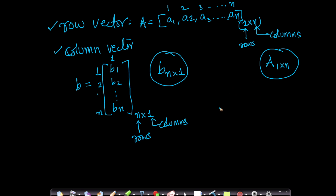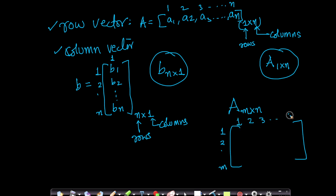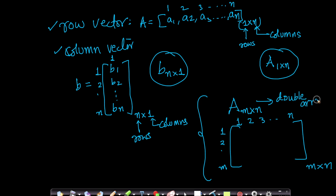Extending this idea further, matrices are typically represented as m×n. If I have a matrix with m rows and n columns, this is called a matrix of size m×n. We can think of matrices as a double array — an array of arrays, for those from a computer science background. For others, you may have come across matrices in high school or your first year of undergrad. The subscript notation tells you how many rows and how many columns exist.